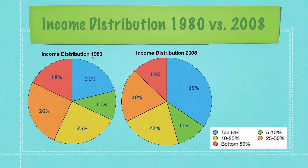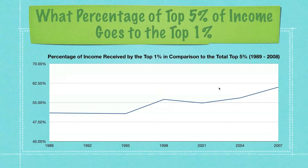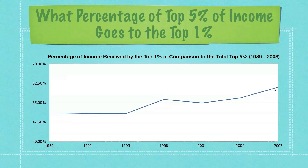Looking at income distribution in 1980 versus 2008, the top 5% of incomes have ballooned from 21% to 35% over this period of time. You can see where loss of income from other brackets has allowed this number to balloon. What percentage of the top 5% of income actually goes to the top 1%? That number has also gone up dramatically — in 1989 the top 1% represented about 50% of the top 5%'s income, rising to about 61% in 2007.